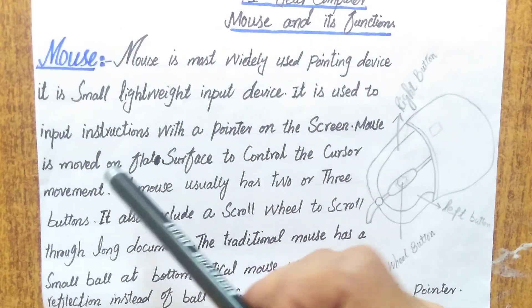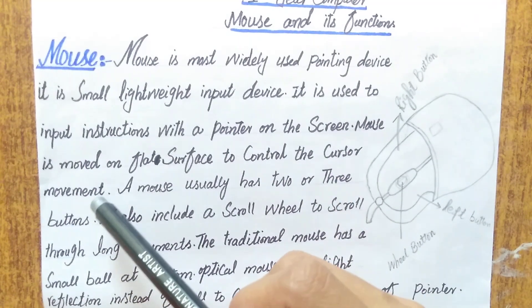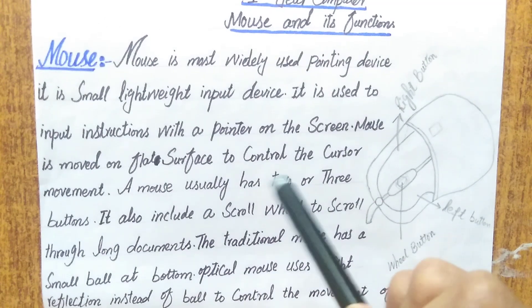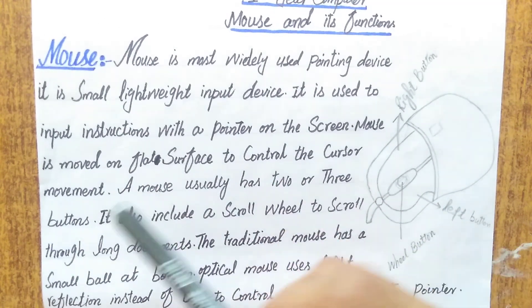Mouse is moved on flat surface to control the cursor movement. Mouse usually has two or three buttons.